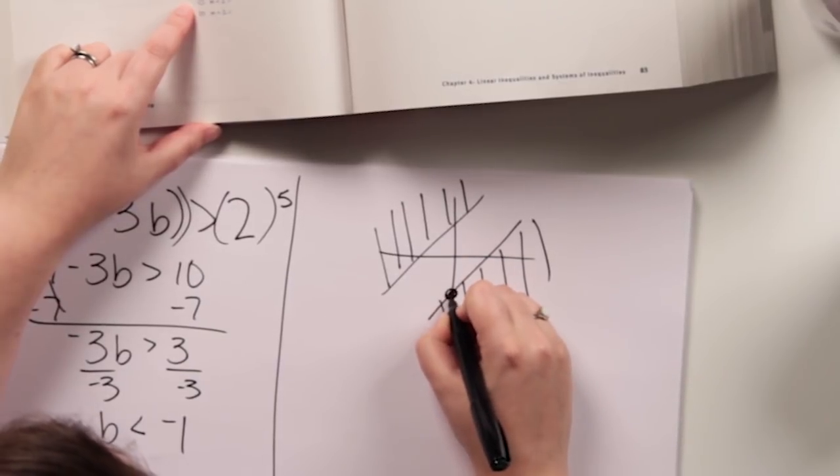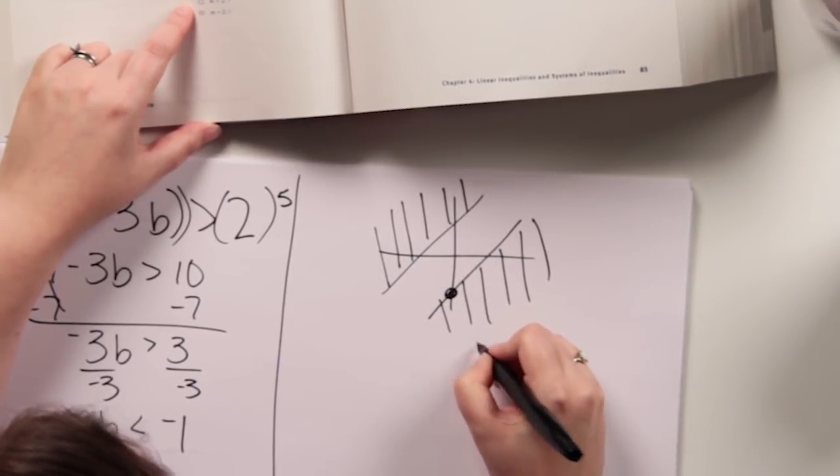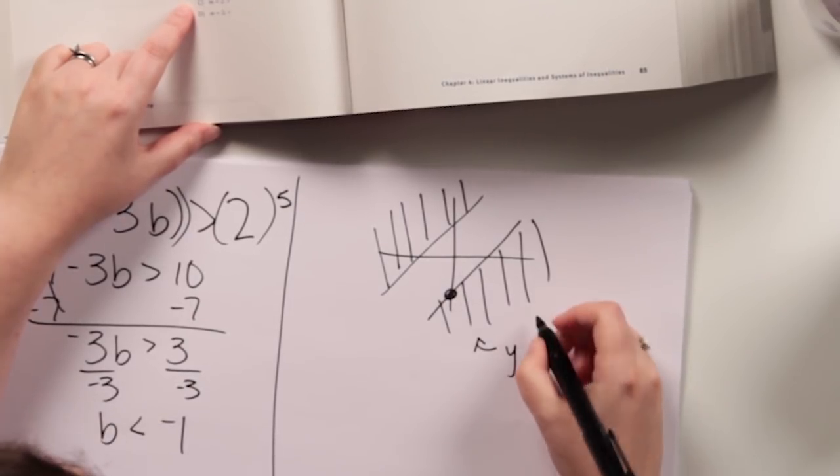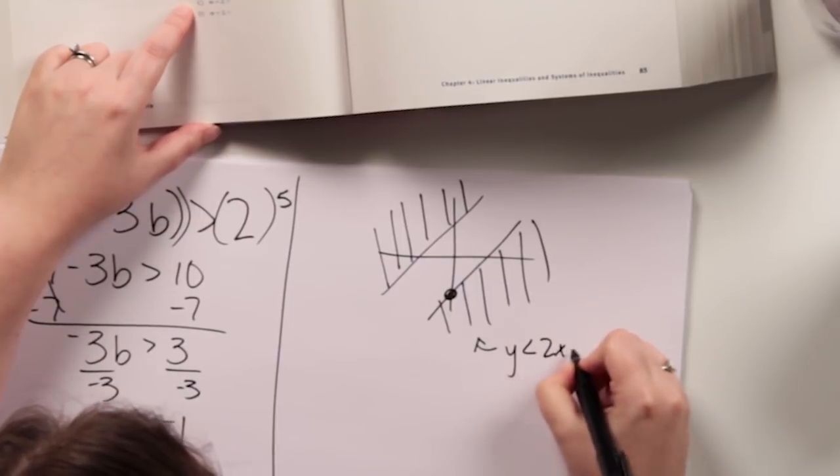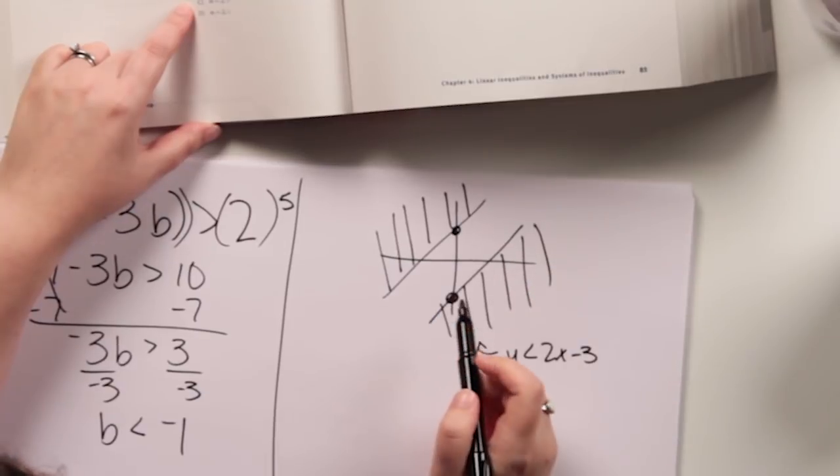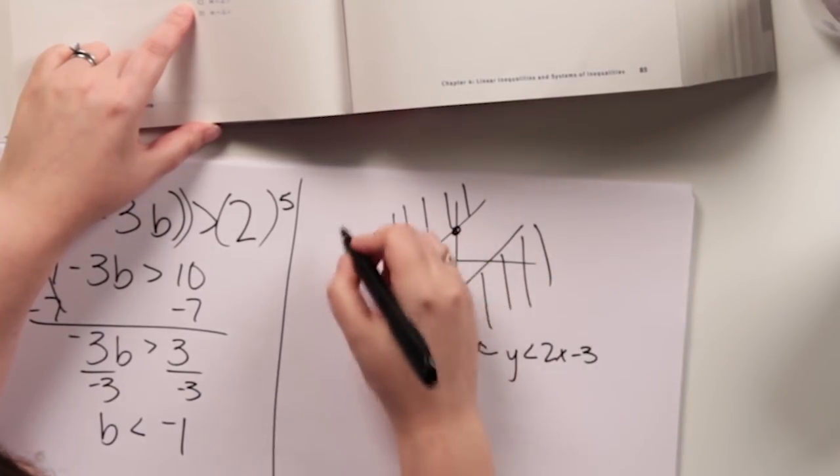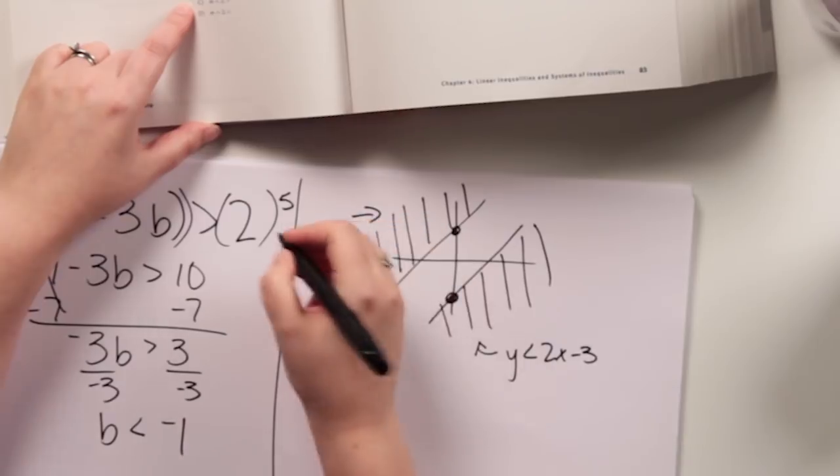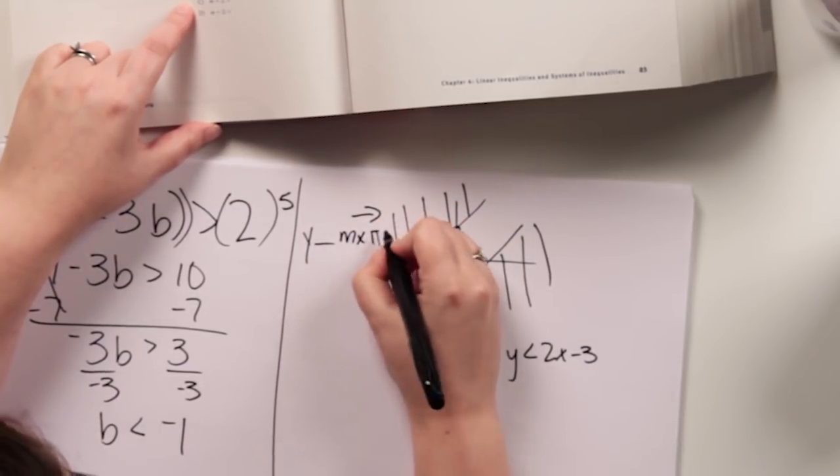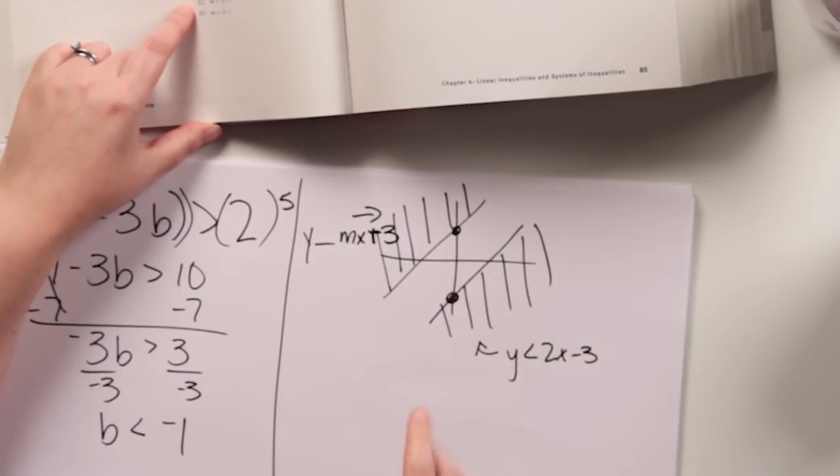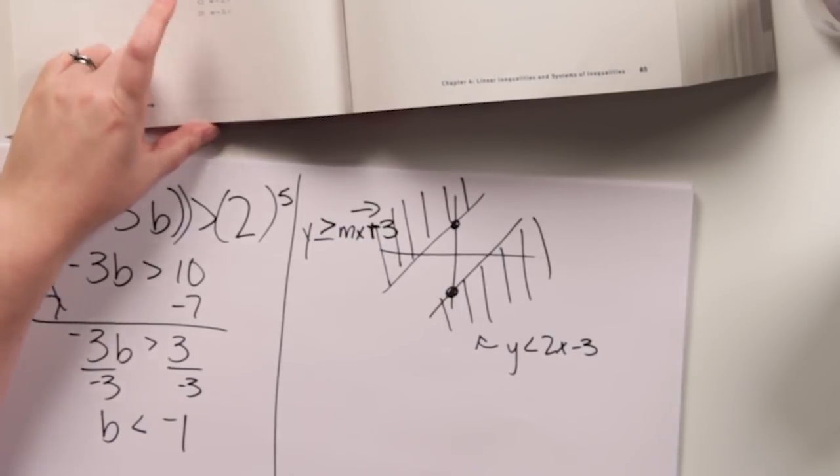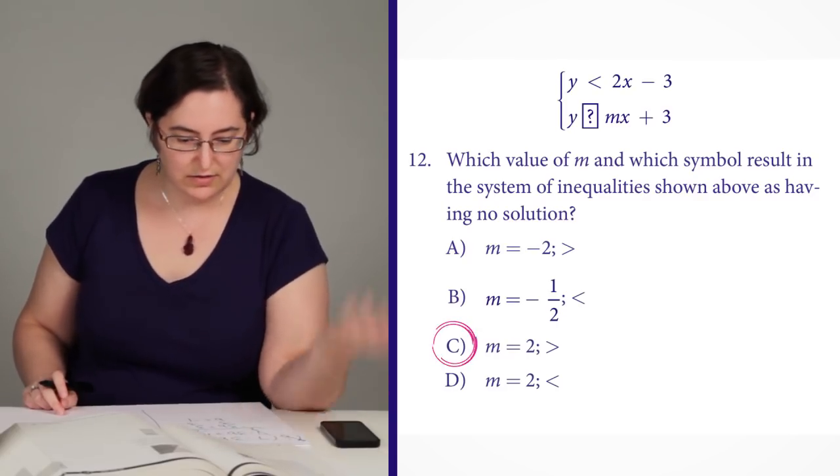And I need them shaded in opposite directions. So this, the first one is 2x minus 3, so that's my y-intercept below. And that one is shaded down, so that makes sense. So y is less than, and then this one is my y plus 3, so this is y something, mx plus 3. Now, I said I needed to shade that up, so I need a greater than symbol there, which is answer to our C. Perfect.